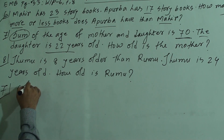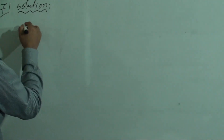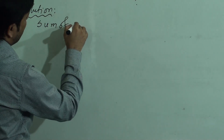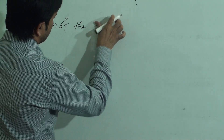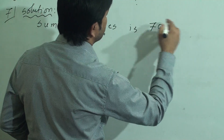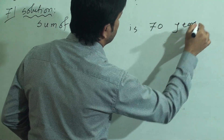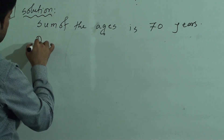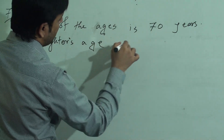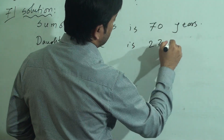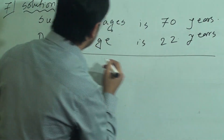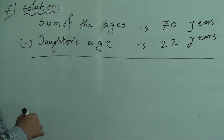Question 7, solution. Sum of the age is 70 years. Daughter's age is 22 years — this is given in the question. If we subtract the daughter's age from the sum, we will get the mother's age.